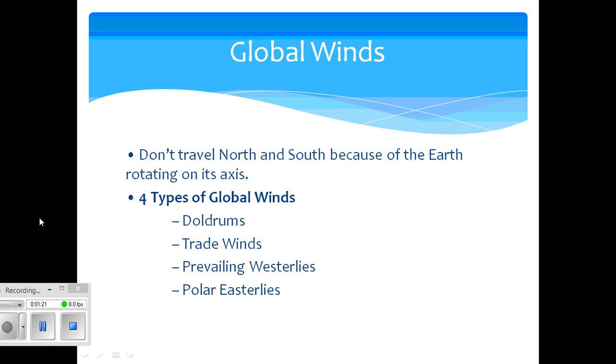Global winds do not travel north and south because of the natural rotation of the earth on its axis. Now there are four types of global winds. They include doldrums, trade winds, prevailing westerlies, and polar easterlies.